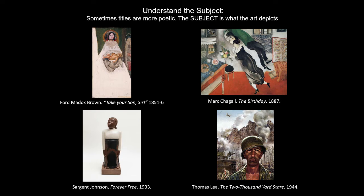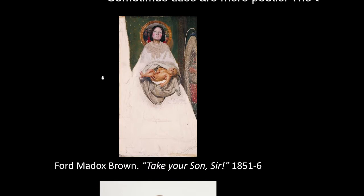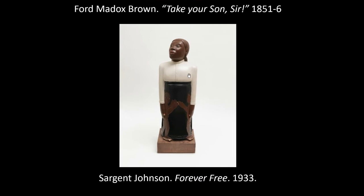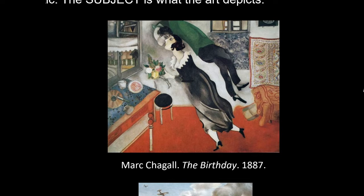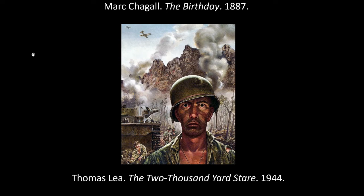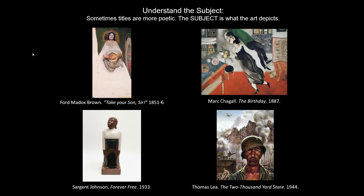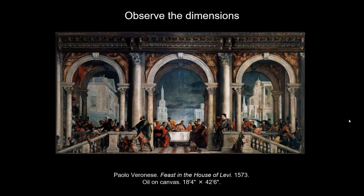We might also need to use a bit more imagination. Sometimes titles will give us a subject, but occasionally they are a bit more poetic. The title of this piece is Take Your Son, Sir. The subject of the work of art is a woman holding an infant. The subject of this work of art is an African-American woman with two children; the title is Forever Free. The title of this piece is The Birthday, and the subject is two people in an interior who are kissing. The subject of this work of art is a soldier — a painting about post-traumatic stress and the horrors of wartime. The title is The 2000 Yard Stare. The subject is what the art depicts; the title sometimes helps us with that.